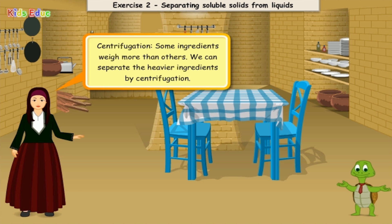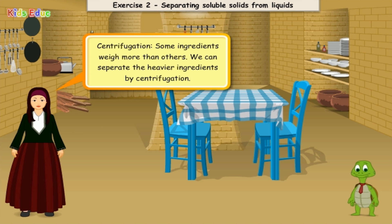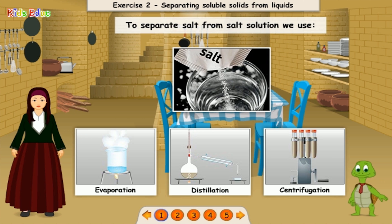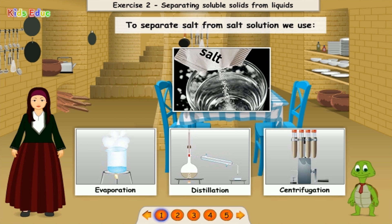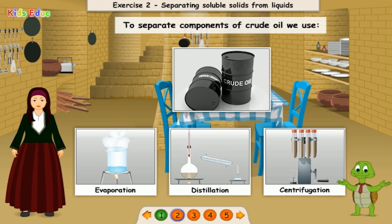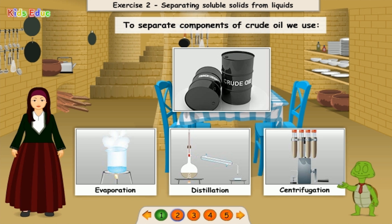Centrifugation: some ingredients weigh more than others, and we can separate the heavier ingredients by centrifugation. To separate salt from salt solution, we use: evaporation, distillation, or centrifugation? To separate components of crude oil, we use: evaporation, distillation, or centrifugation?